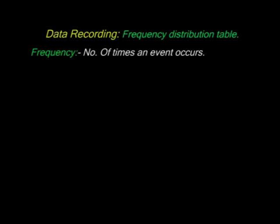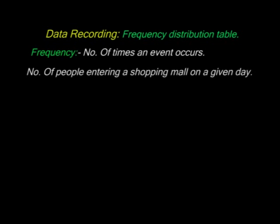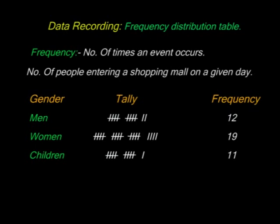Once you collect data from the field you need to record it, so we use what we call a frequency distribution table. Frequency means the number of times something occurs. For example, the number of people entering a shopping mall on a particular day. We have 12 men, 19 women, and 11 children. The tally is grouped into groups of five — four vertical strokes and one horizontal stroke. Each stroke represents one person, item, or event. This is a frequency distribution table, and you can record any data that involves counting.